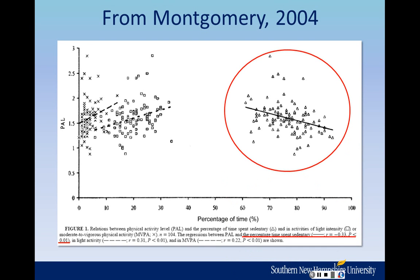Let's focus first on the right-hand side. The circle is around the data for the percentage of time spent in sedentary activity — a bunch of little triangles on the graph. Each triangle is the data for an individual person. Each individual has a percentage of time they spent being sedentary and a physical activity level measured. Physical activity level was measured using devices called accelerometers, which attach to your waistband and record the number of movement counts as you move throughout your day. With surveys, they measured the percentage of time spent sedentary and in other intensity activities.